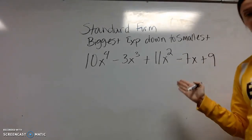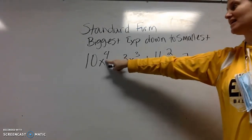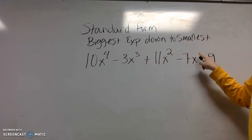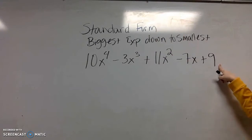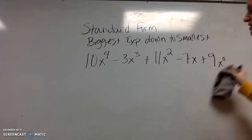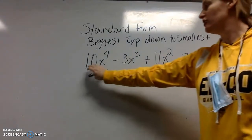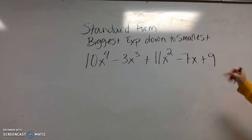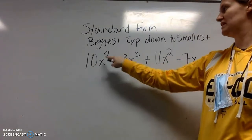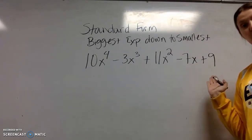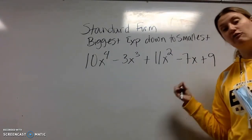So for example, if I have 10x to the fourth minus 3x cubed plus 11x squared minus 1x plus 9, this polynomial is written in standard form. My biggest exponent is a four, then a three, then a two, then a one, and then no variable, no exponent at all. Technically, this is x to the zero, so we don't need it. This is the constant. So your constant is always on the end. Notice that the coefficients have nothing to do with putting it in standard form. It is biggest exponent down to the smallest. That's how you should write polynomials.